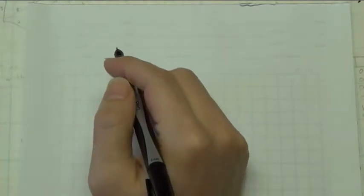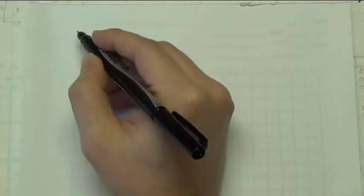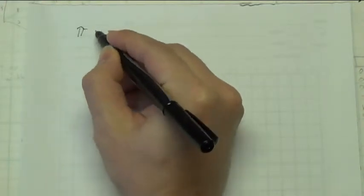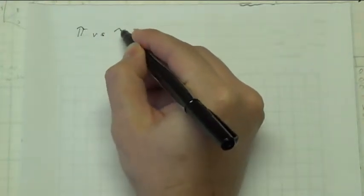So I want to talk about some of my pet peeves in regards to teaching mathematics. The first one I'll just mention briefly is Pi versus Tau.